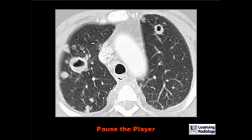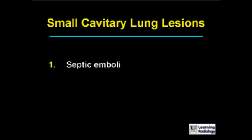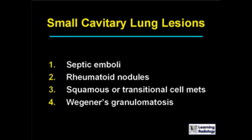The next differential is for small cavitary lung lesions. There are four causes. The causes include septic emboli, rheumatoid nodules, squamous or transitional cell metastases, and Wegener's granulomatosis.